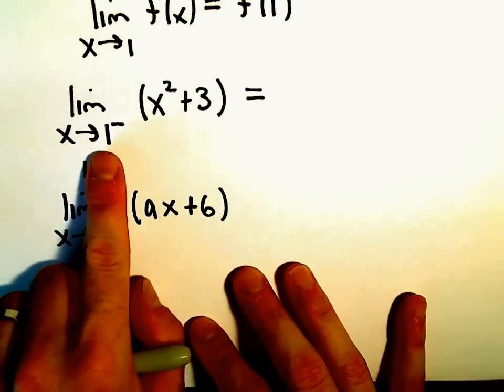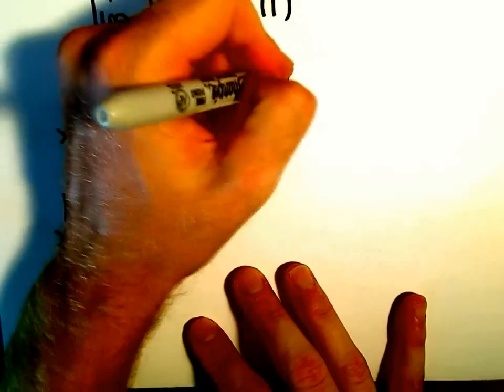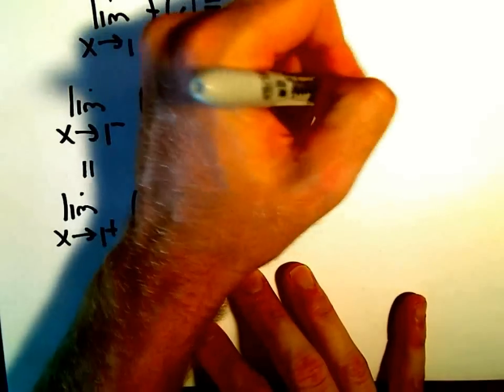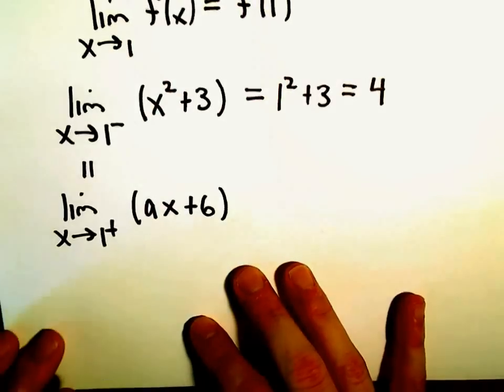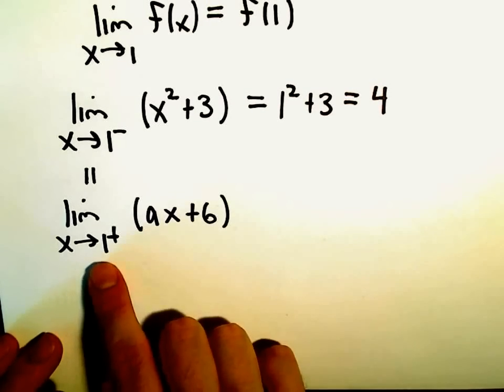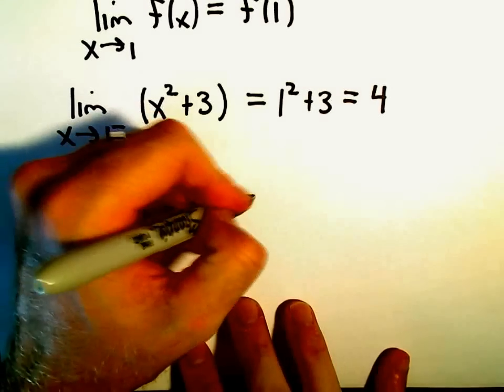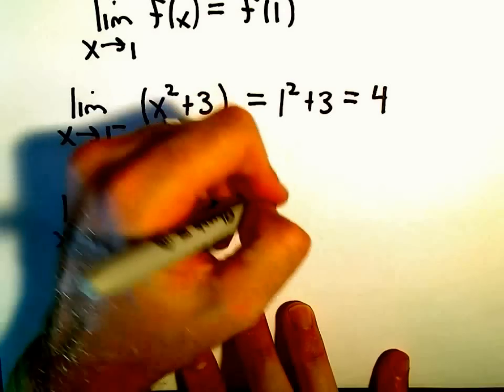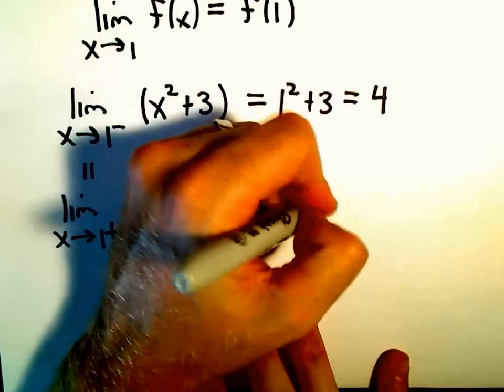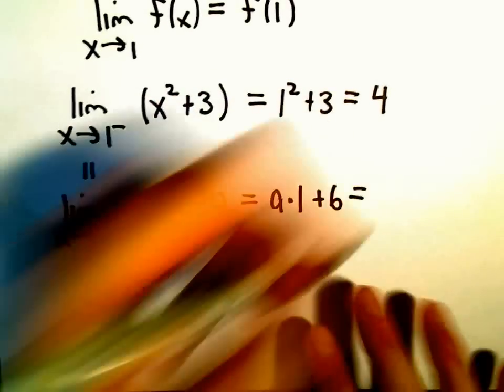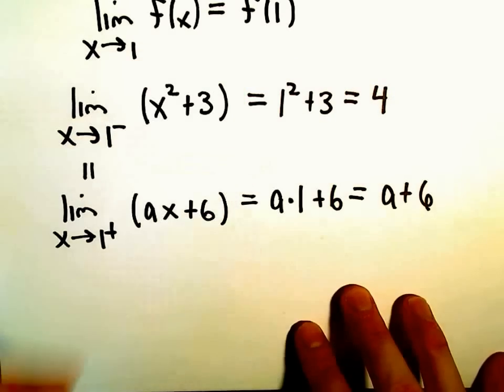Well, for the first one, if we plug in x equals 1, we'll get 1 squared plus 3 or we'll get the value 4. If we plug 1 into the second expression, we're plugging it in for x, we'll get a times 1 plus 6 or we'll just be left with a plus 6.